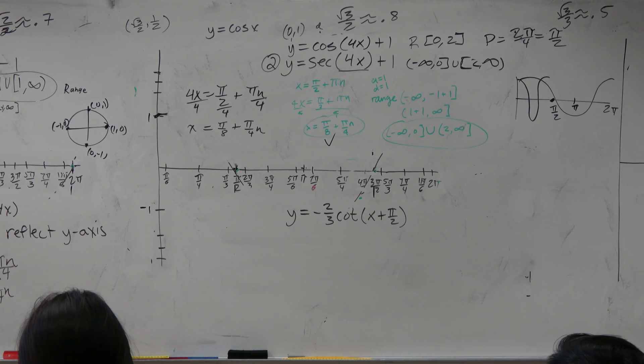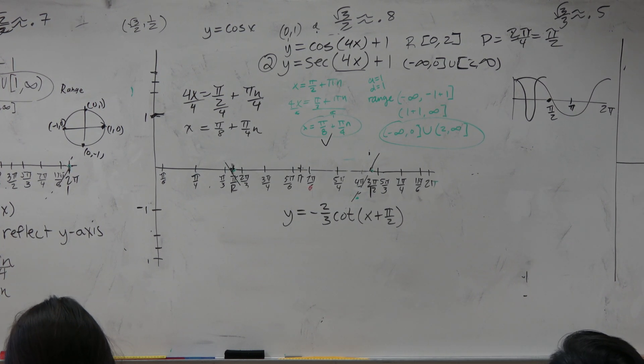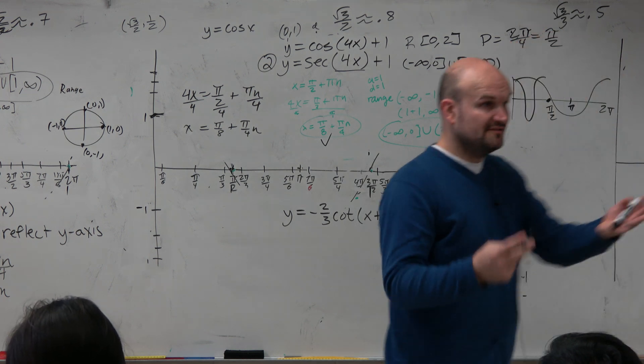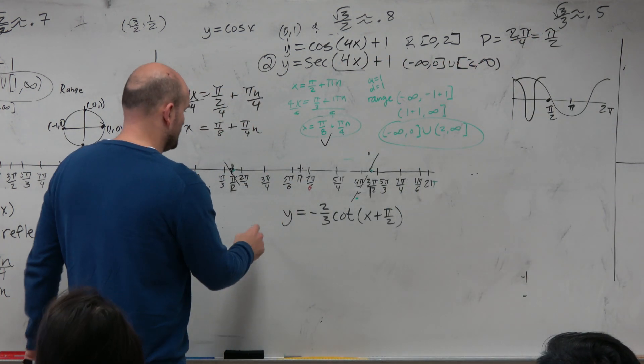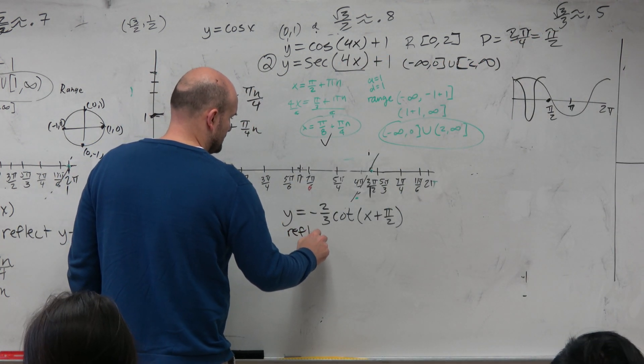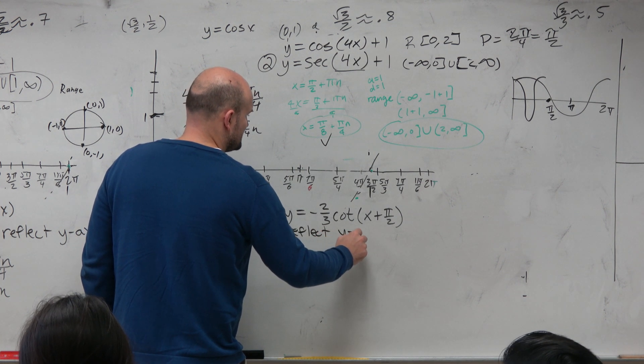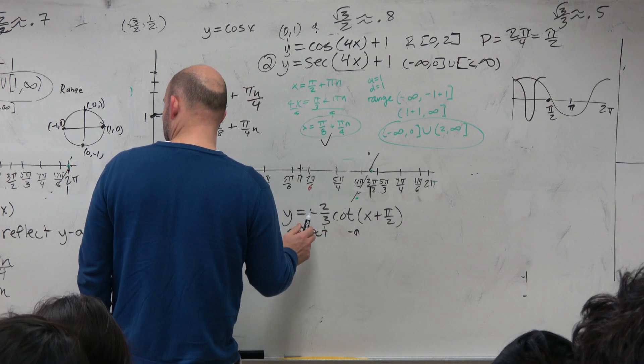You guys can see that there's a negative on the outside. That is going to be a reflection about the y-axis. However, that's not going to affect the asymptotes at all either. So we have reflect the y-axis. Oops, I'm sorry. X-axis.